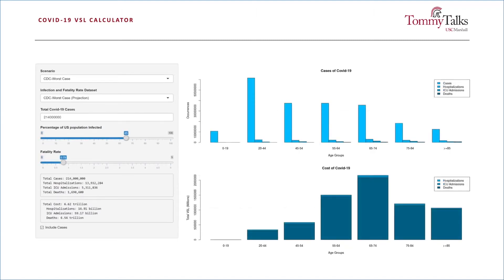But as of now, if we combine the age-adjusted VSL with the projections from infectious disease specialists and public health experts, we find that the economic cost of lives lost if we were to treat this just like the flu is projected to be between 6.5 and 8.5 trillion dollars.